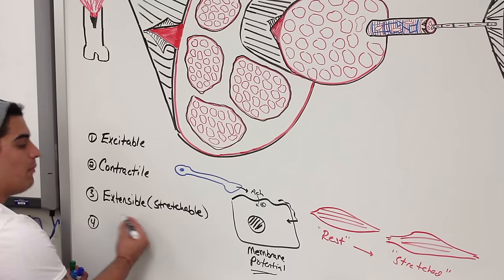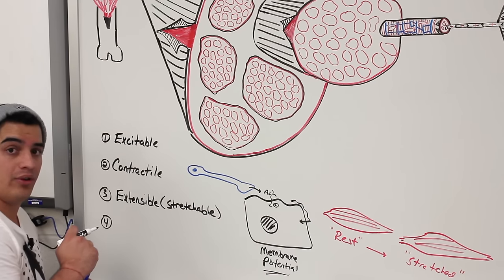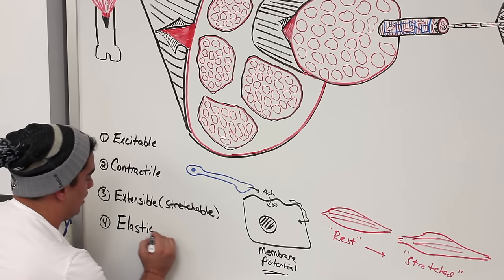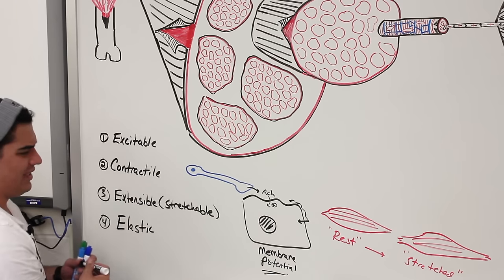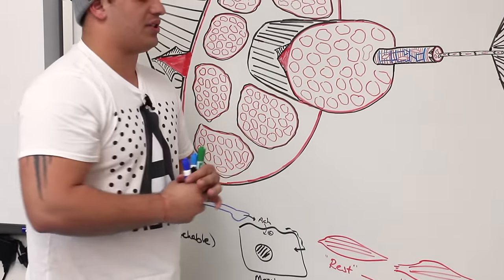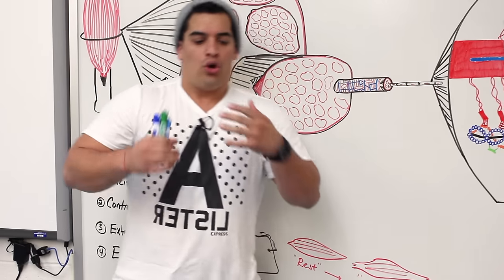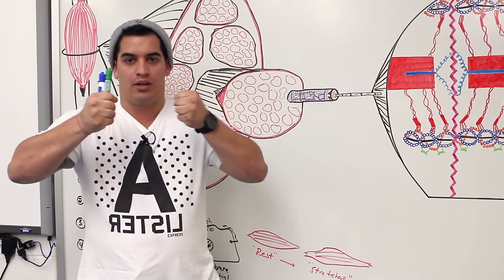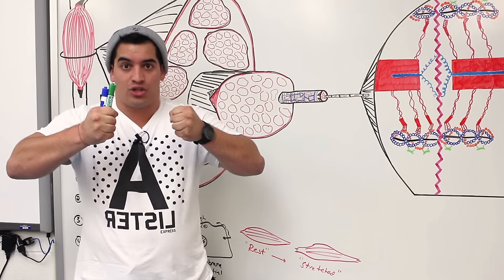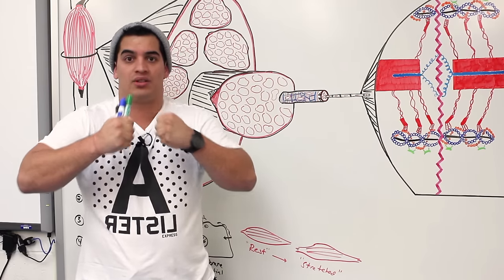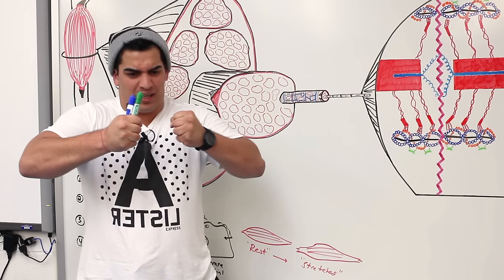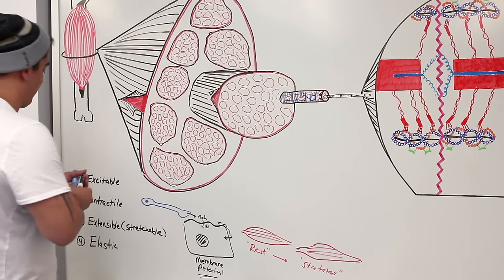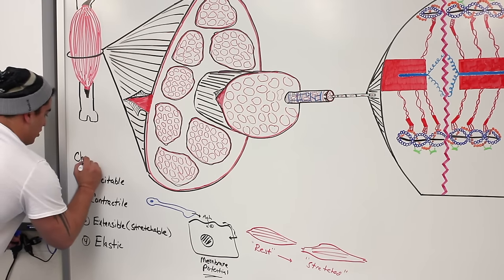Another characteristic of muscle tissue is that it's elastic. Elasticity means that when you stretch a muscle or any tissue, it resists that stretch and always wants to recoil back to the smallest size possible. So when you're trying to stretch something and it's resisting, that's elasticity.